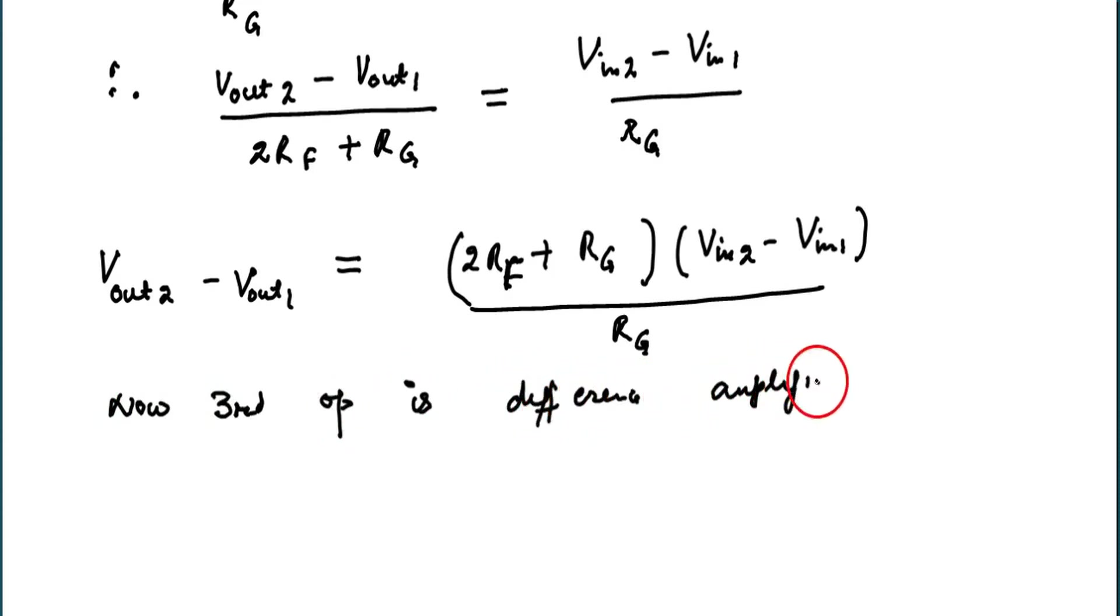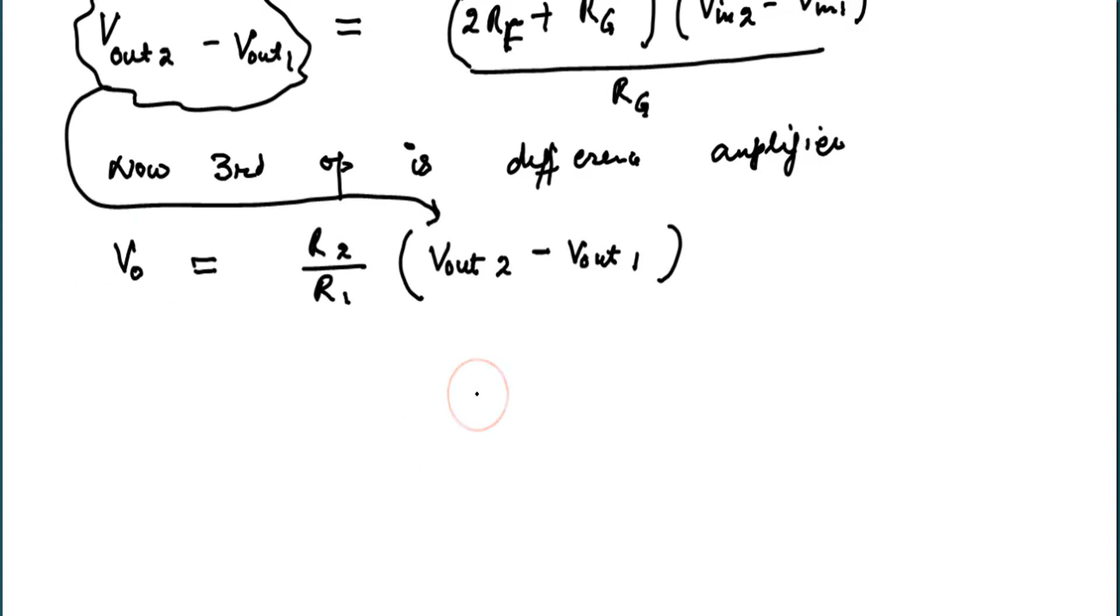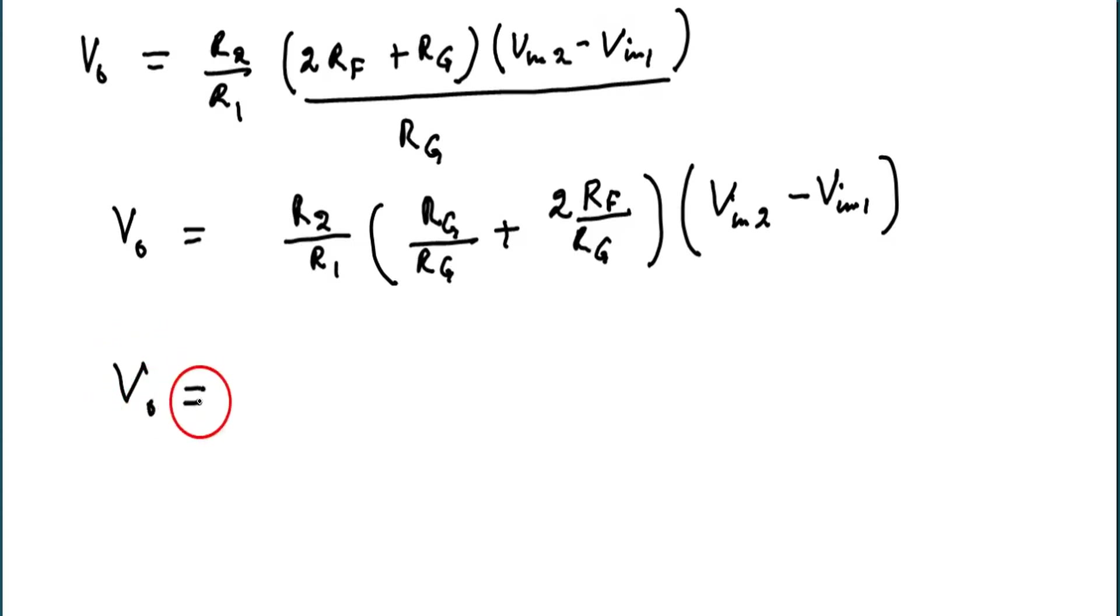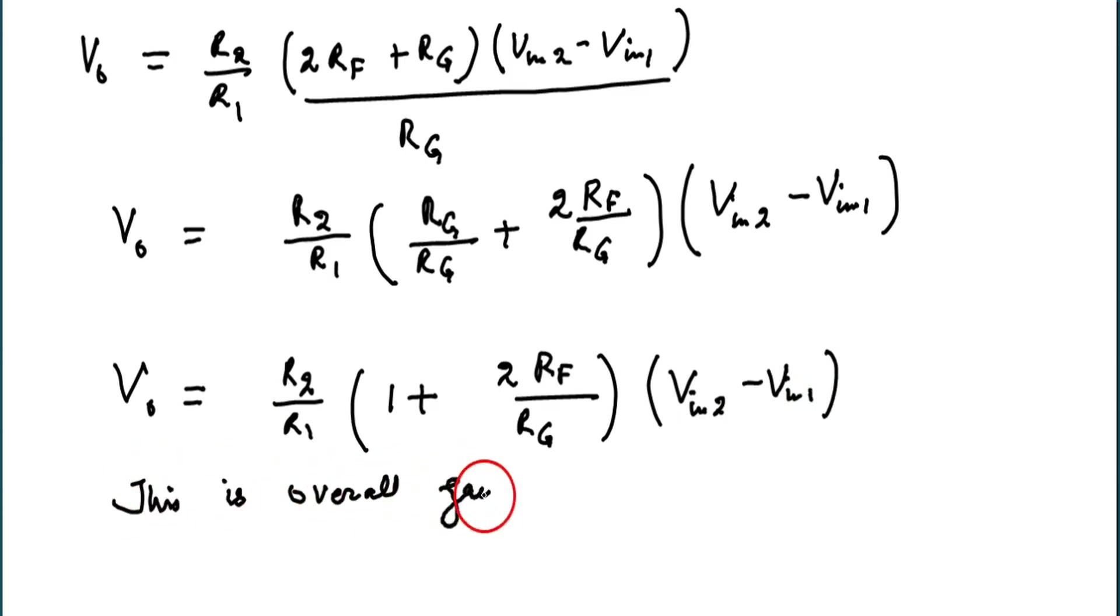And you know the third op is only a difference amplifier. The output of the third op is V0 is R2 over R1 into Vout2 minus Vout1. Substituting here the value of Vout2 minus Vout1, simplifying the expression. So this is the overall gain of instrumentation amplifier with three ops.